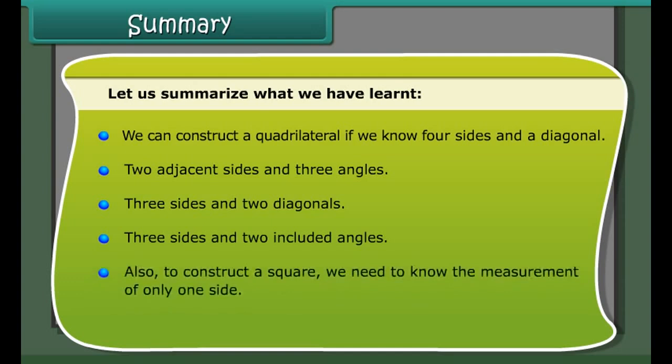Let us summarize what we have learned. We can construct a quadrilateral if we know: four sides and a diagonal; two adjacent sides and three angles; three sides and two diagonals; three sides and two included angles. Also, to construct a square, we need to know the measurement of only one side.